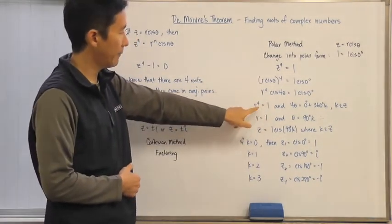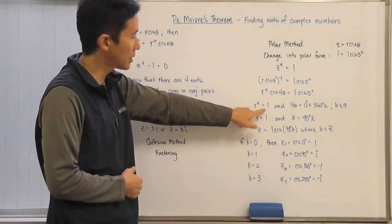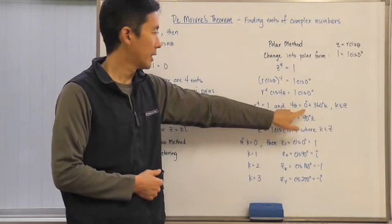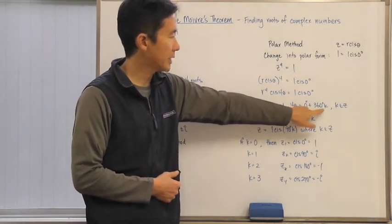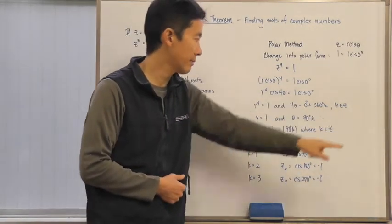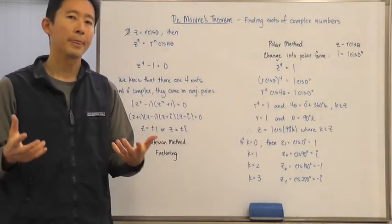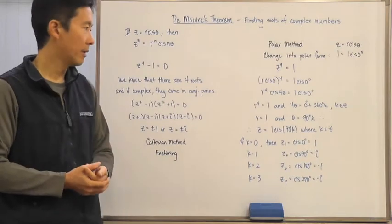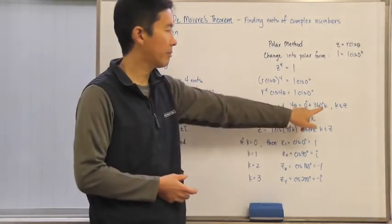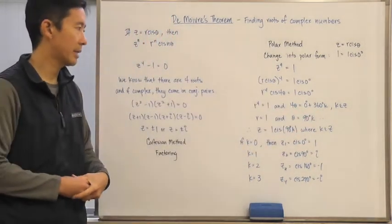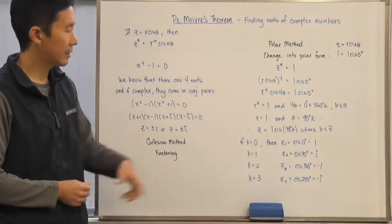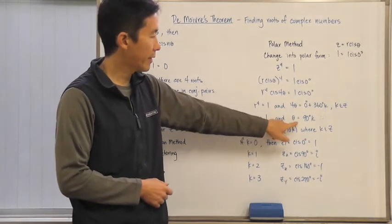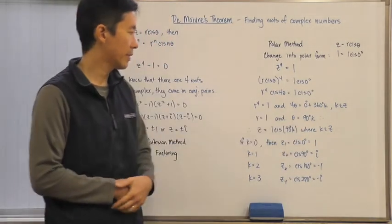So, what I do is I just say the moduli have to be equal to each other, and the arguments have to be equal to each other. Now, the reason why we have the plus 360 degrees k here, where k is an element of z, is because we know that the cis is going to exhibit periodic behavior with the period being 360k, where k is an element of z. So, if I take the fourth root of all sides, I get this. If I divide by four, I get this for the arguments.